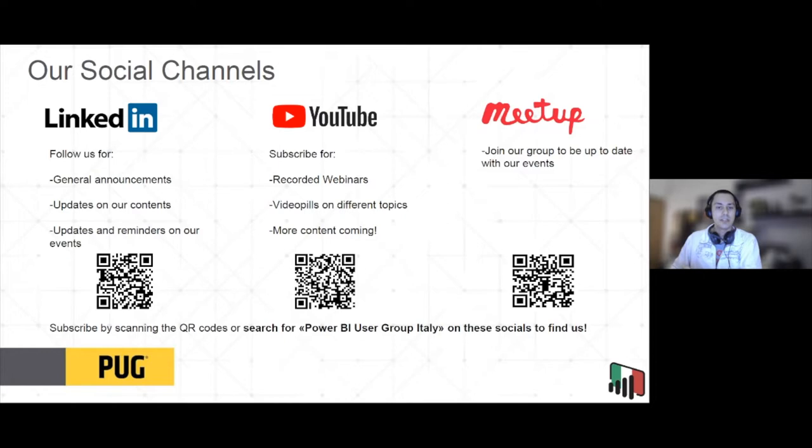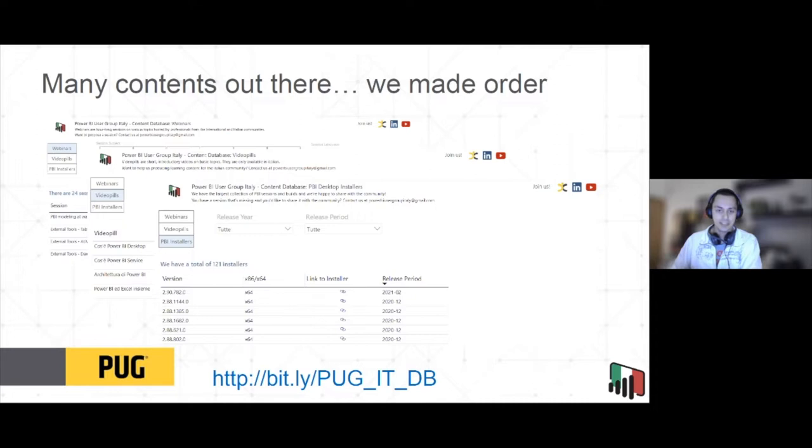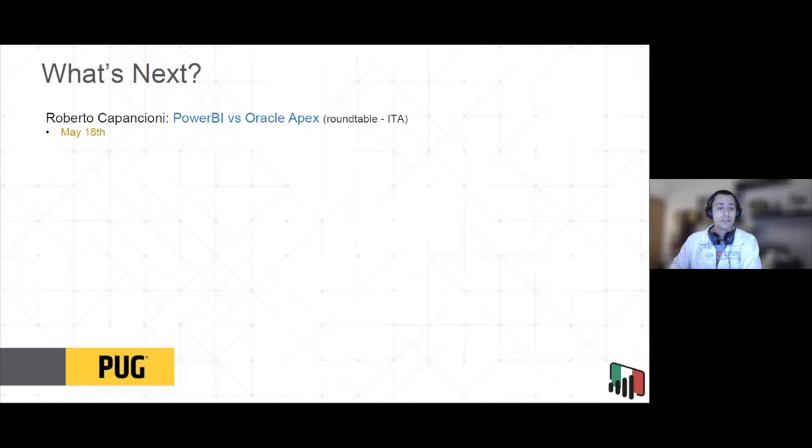Using LinkedIn and Meetup, we have updated our report which includes the pills we are making — new DAX pills in Italian — and we have a huge list of old Power BI installers in case you need another version of Power BI. The next roundtable will be with Roberto Caponcioni on the 18th of May. It will be in Italian and will be about a comparison between Power BI and Oracle APEX.